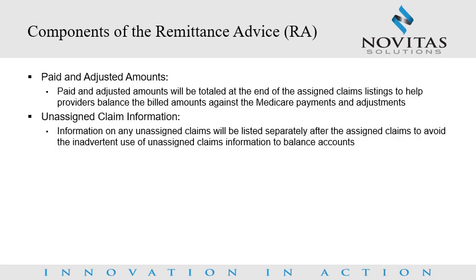Components of the remittance advice. Paid and adjusted amounts will be totaled at the end of the assigned claims listings to help providers balance the billed amounts against the Medicare payments and adjustments. Unassigned claim information on any unassigned claims will be listed separately after the assigned claims to avoid the inadvertent use of unassigned claims information to balance accounts.